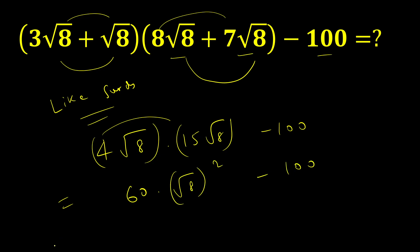Minus 100. Now can I cancel these two? We can cancel radical sign with the square, right? So 60 into 8 minus 100 equals 480 minus 100.